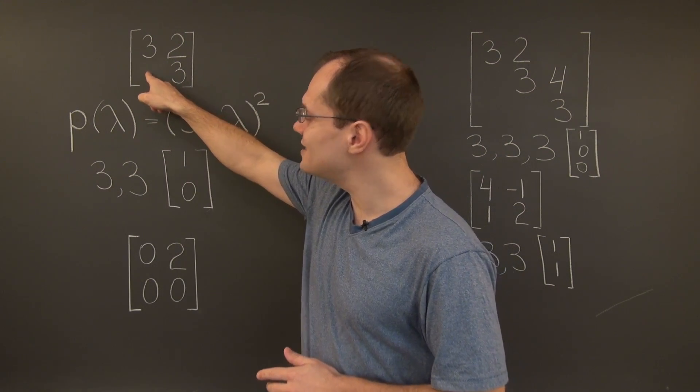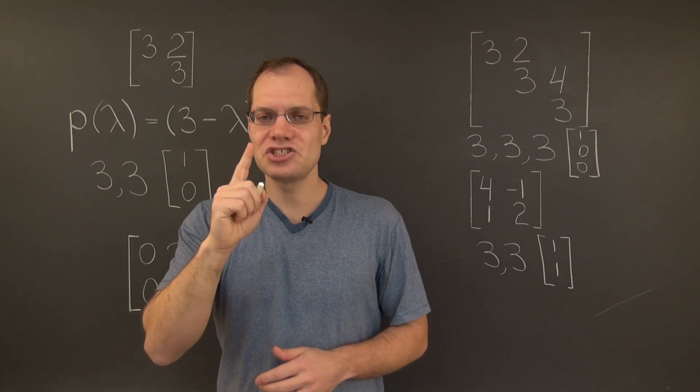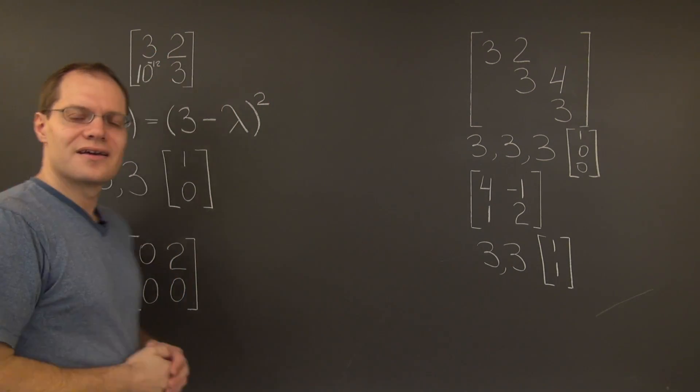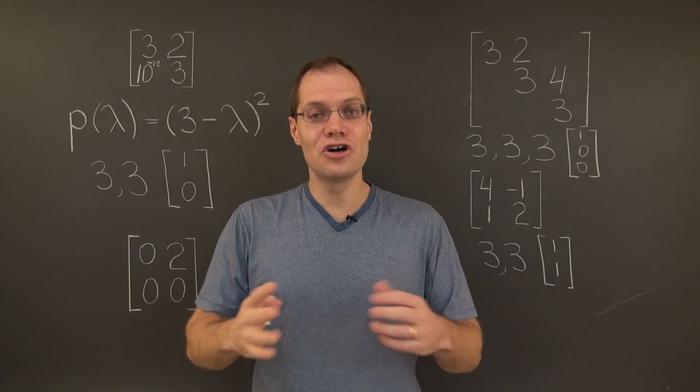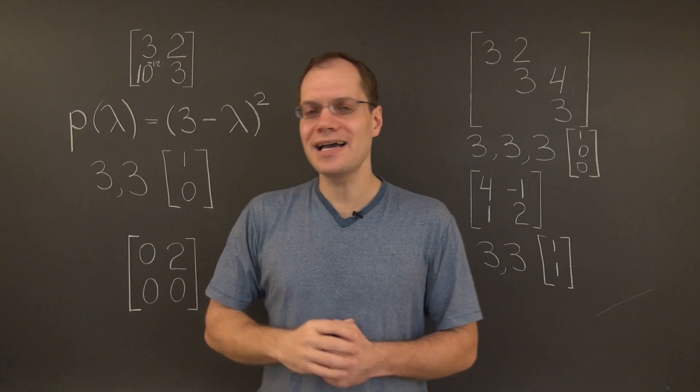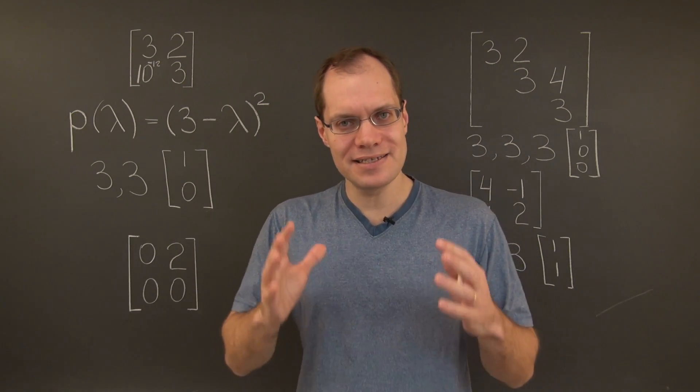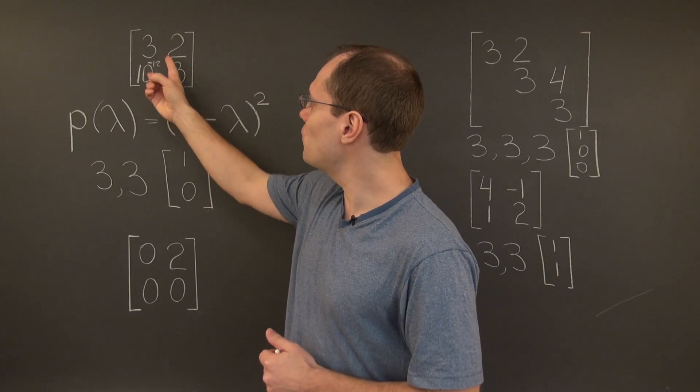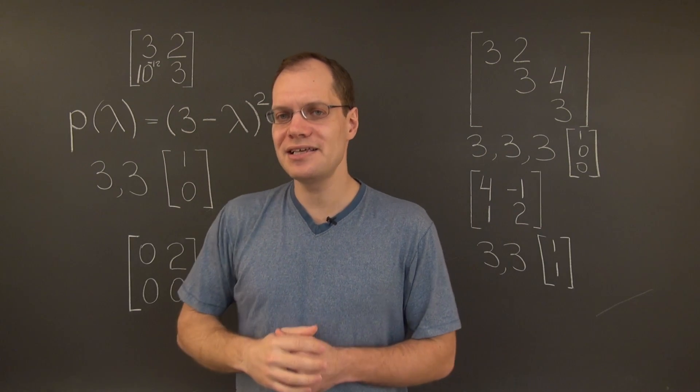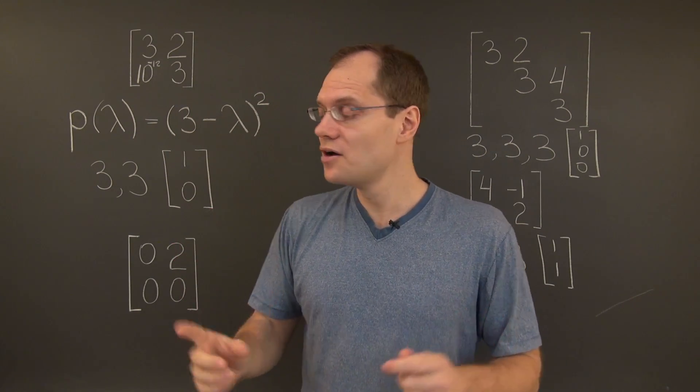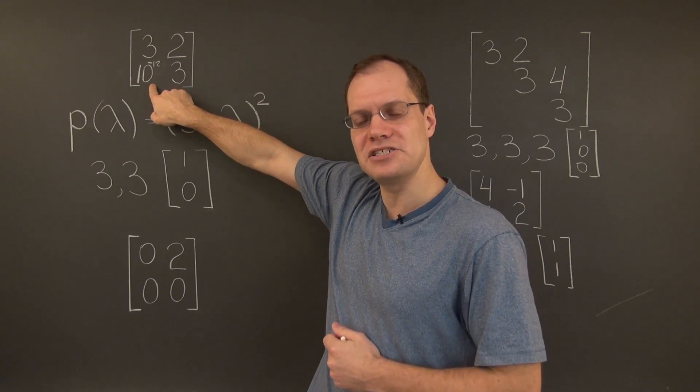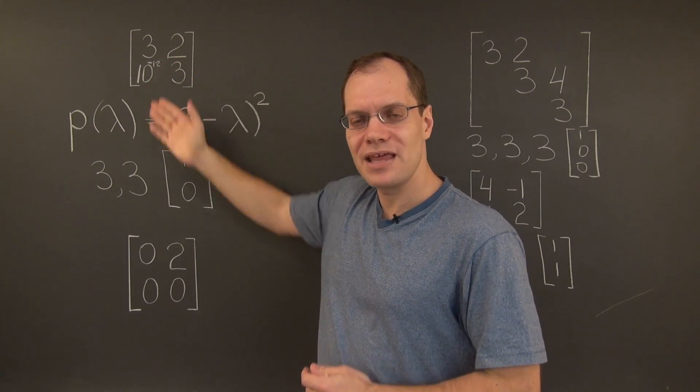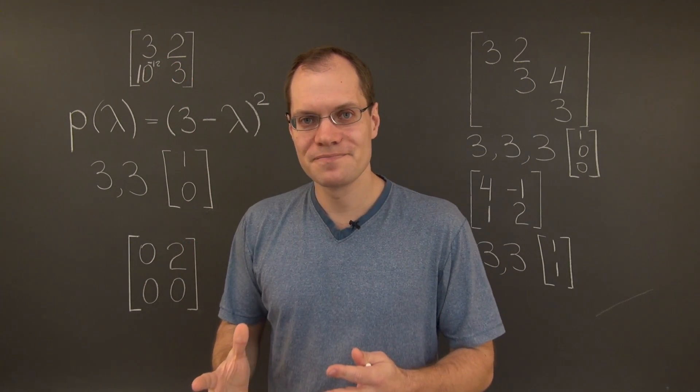More interestingly, if we were to change this entry by just a little bit, let's change it by one part in a trillion. Let's change it by one trillionth. The resulting matrix is once again no longer defective. It has two distinct eigenvalues and two linearly independent eigenvectors. In fact, the eigenvalues change by one part in a million. If you do the calculation, you'll see that. You may say that's still a small change, but it's a million times greater than the perturbation.